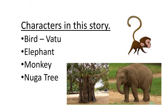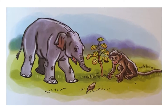Today we are going to learn about Tiddhira Jathaka. Let's see what the characters in this story are. There is a bird named Vatu, and there is an elephant, and there is a monkey. And there is a nugga tree also in this story.